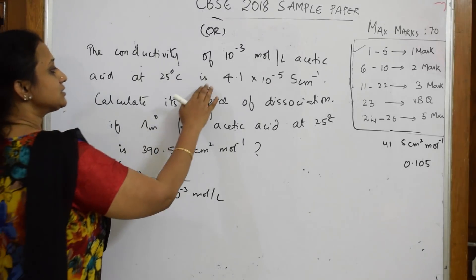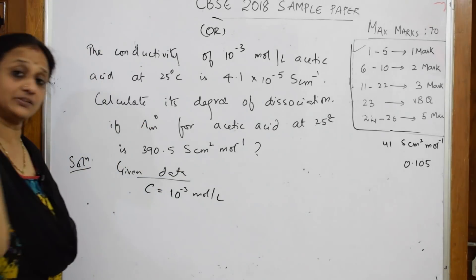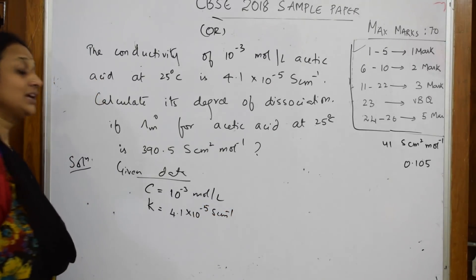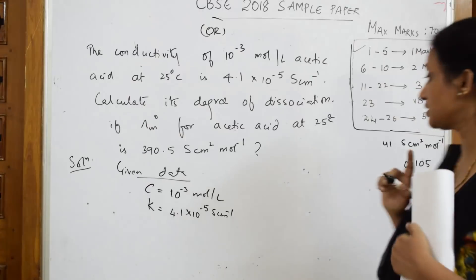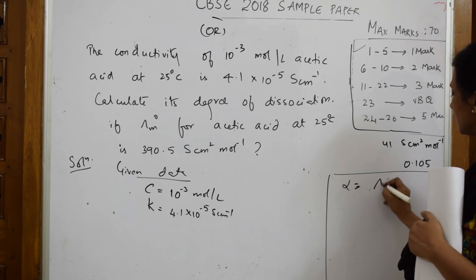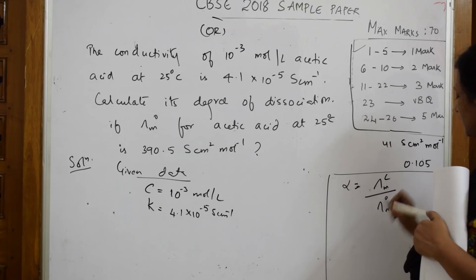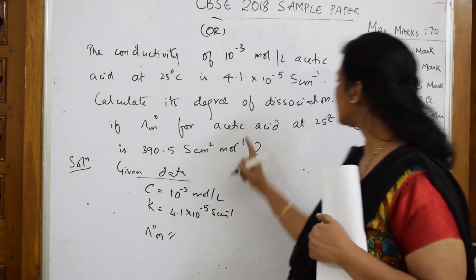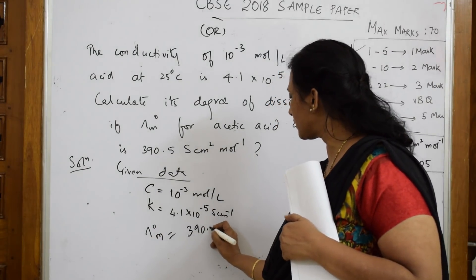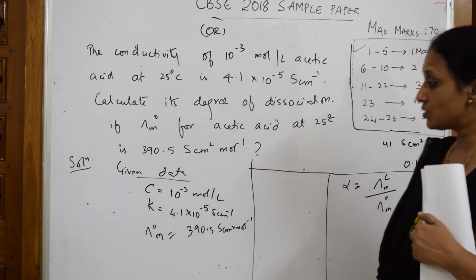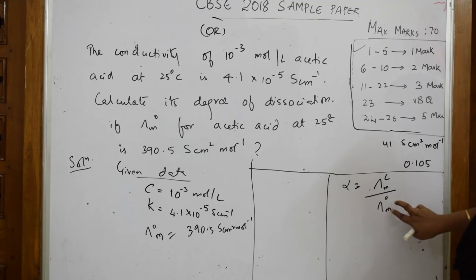They ask us to calculate the degree of dissociation α. The formula is α = Λm(c) / Λm°. They have also given the limiting molar conductivity Λm° = 390.5 S cm² mol⁻¹. Now I need to first find Λm(c) from the given data.